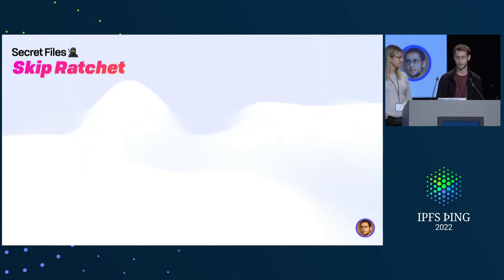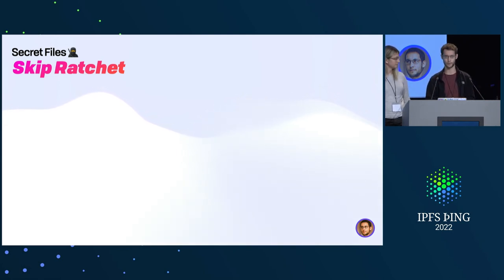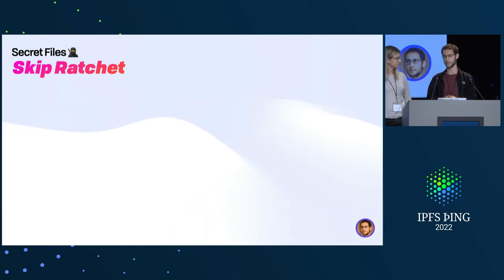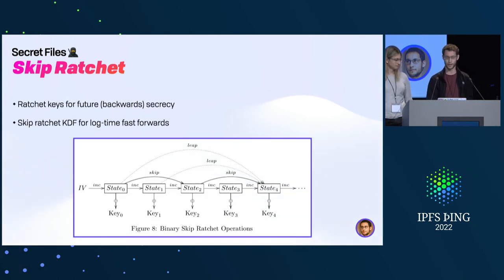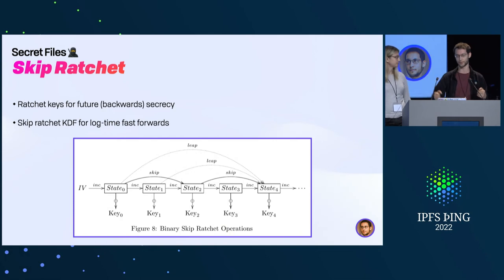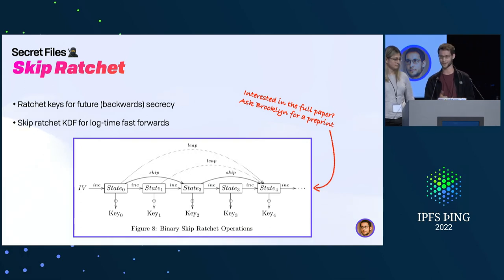Another problem we addressed: when you have this across-time ratcheting of keys, you often end up offline for a while — say you worked on your laptop and then open your phone — and you need to fast-forward many times until you arrive at the new version of your file system, which is not ideal. So Brook invented something we're calling a skip ratchet: it's a way of deriving new keys so that getting to the most recent version is an O(log N) operation instead of O(N). If you want to know more about that, ask Brook — we have a paper.